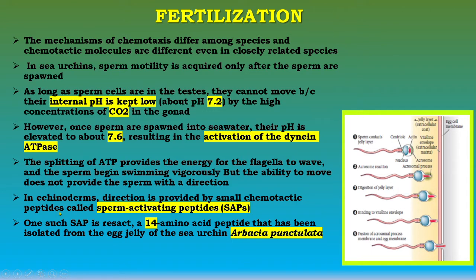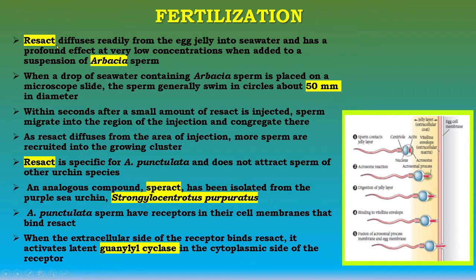In Arbacia, direction is provided by small chemotactic peptides known as SAPs — sperm activating peptides. One such SAP is resact, a 14 amino acid peptide isolated from the egg jelly of the sea urchin Arbacia punctulata. Resact diffuses readily from the egg jelly into sea water and has a profound effect at very low concentrations. When a small amount of resact is injected into a suspension of Arbacia sperm swimming in circles about 50 micrometers in diameter, the sperm migrate into the region of injection and congregate there.